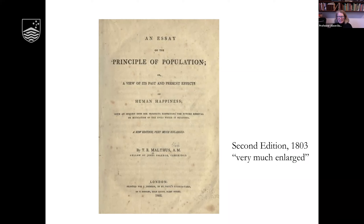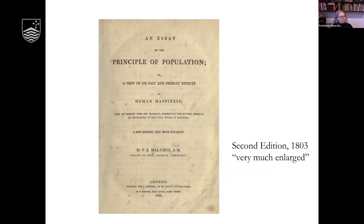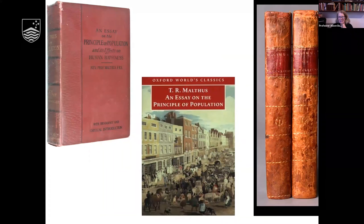The content of that ten-times-as-long second edition is something I'll come to in a minute — it features New South Wales amongst other places. He puts his name to it this time: T. R. Malthus, Fellow of Jesus College Cambridge. It's a new edition, very much enlarged. The subtitle has changed — the framing as a response to Condorcet and Godwin has gone, replaced by 'A view of its past and present effects on human happiness with an inquiry into the prospects reflecting the future removal or mitigation of the evils.' The final edition is 1826, and it's never been out of print, translated into many languages — first German.